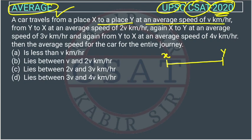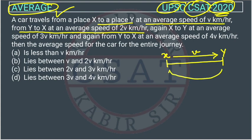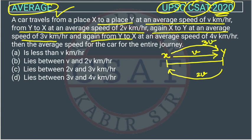In the first round the speed is V. From Y to X at an average speed of 2V. Again X to Y at an average speed of 3V. And again from Y to X at a speed of 4V. We have to calculate the average speed for the entire journey.